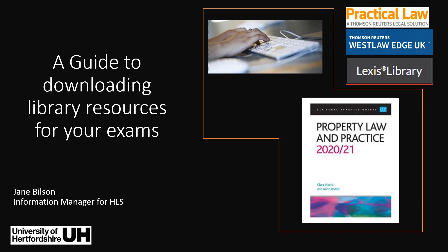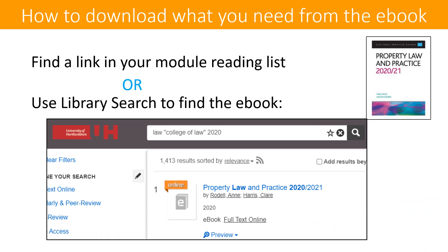This is a quick guide to downloading the library resources that you'll need to access offline for your proctored exams. We're going to look at downloading one of the College of Law Publishing manuals as an e-book, as well as documents from the legal databases. In this example we're going to be looking for the property law and practice manual. First, find a link in your module reading list, or you might need to do a search in library search on the online library page in StudyNet.